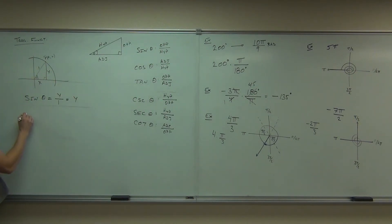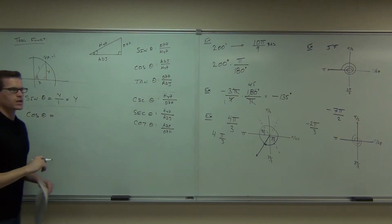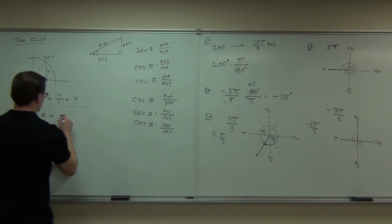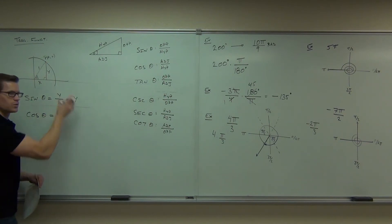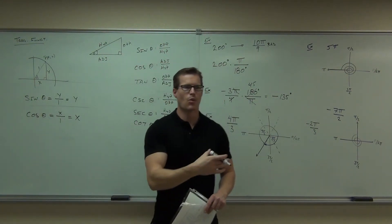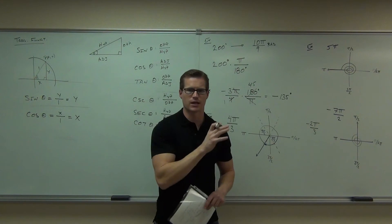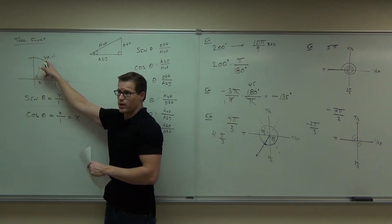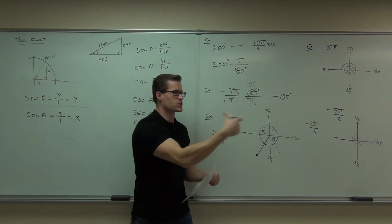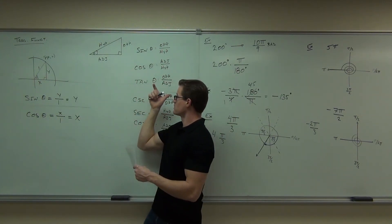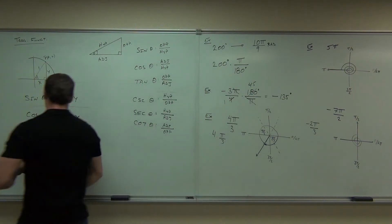Cosine should be adjacent over hypotenuse. The adjacent of our angle is x, and the hypotenuse is one, so we get x over one, or x. That's why on the unit circle, when you see a coordinate point (x, y), cosine comes first and sine comes second — cosine of that angle is x, and sine of that angle is y. That's how we correlate it to any point on the unit circle. That's why we combine the idea of the unit circle with our trigonometry.